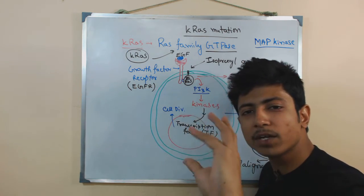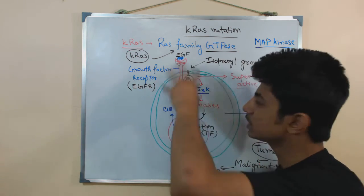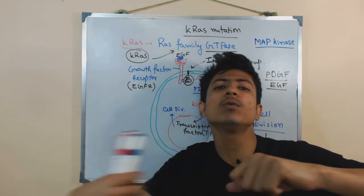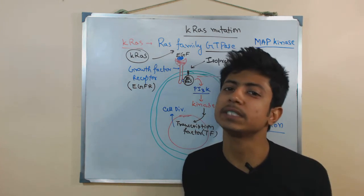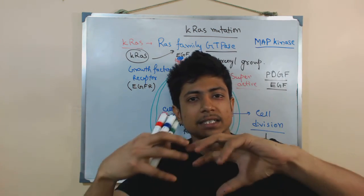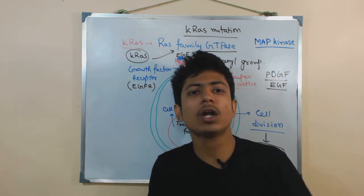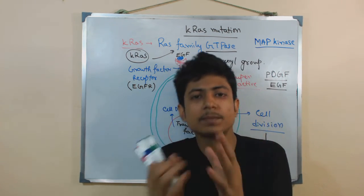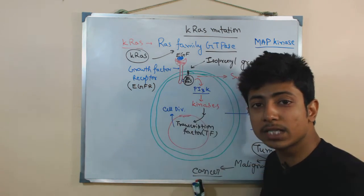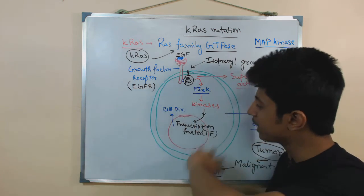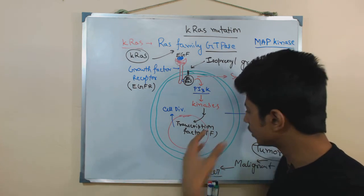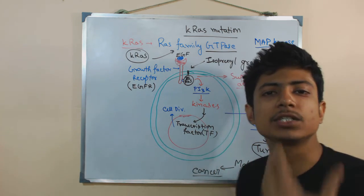Normally, once cell division is completed, RAS should have a conformational change after GTP hydrolysis — it should expel the GTP and become inactive. But due to certain mutations in RAS, that removal does not take place. RAS is always binding with GTP, continuously activating PI3 kinase and other kinases, forcing the cell to divide again and again — converting it into a malignant tumor or cancer.